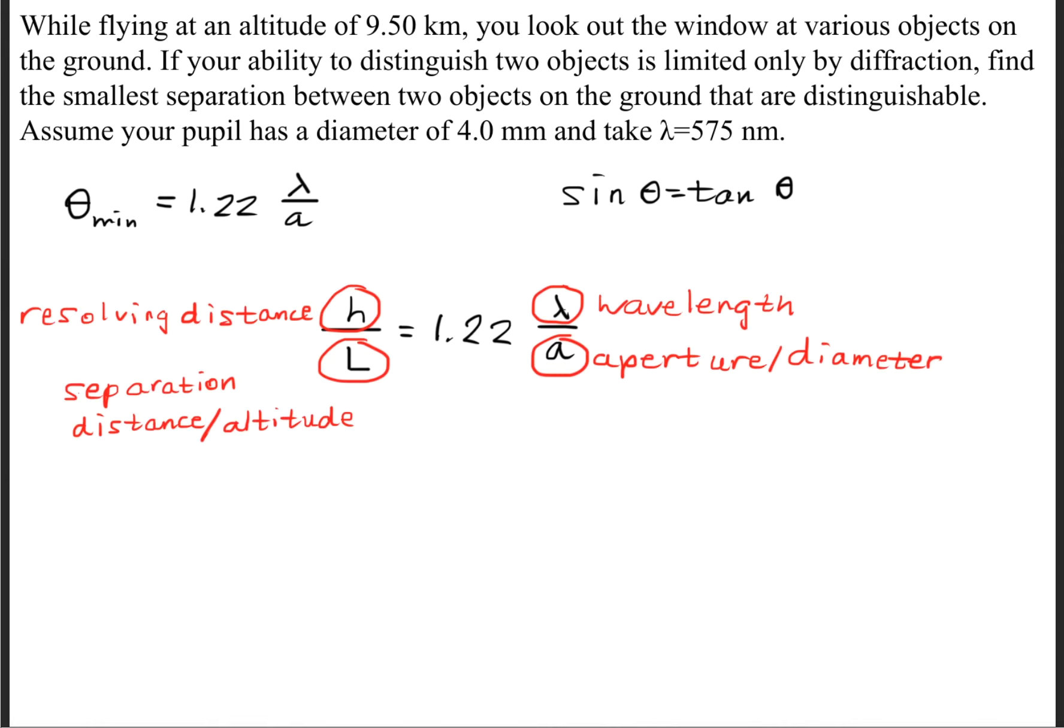The next thing we should do is understand what these symbols are. The h is the resolving distance, L is the separation distance, or in some questions like the one we have here, it's also known as the altitude. The lambda is the wavelength, and a is the aperture, or in certain questions, it'll be called the diameter.